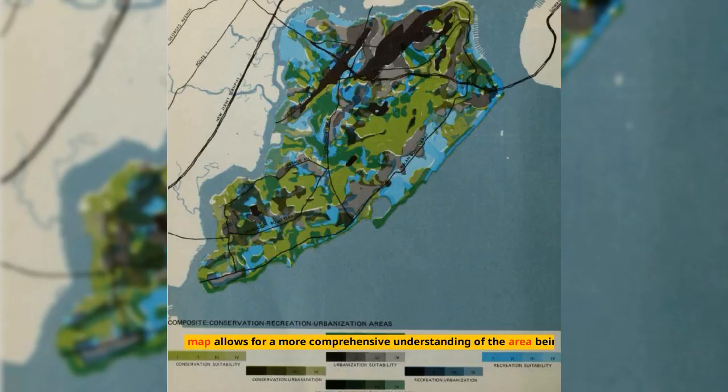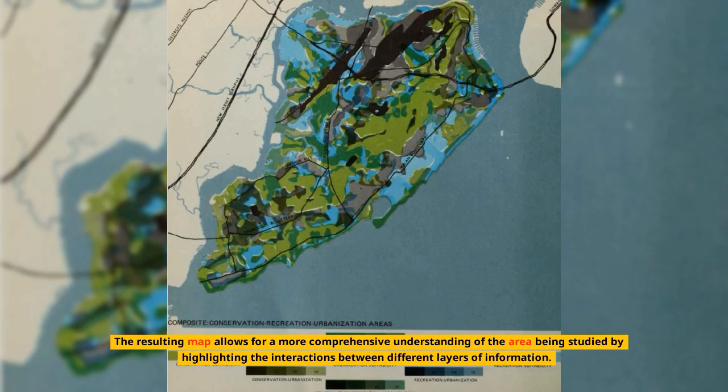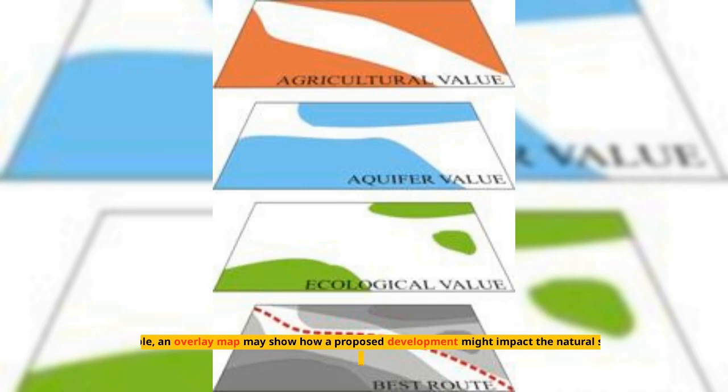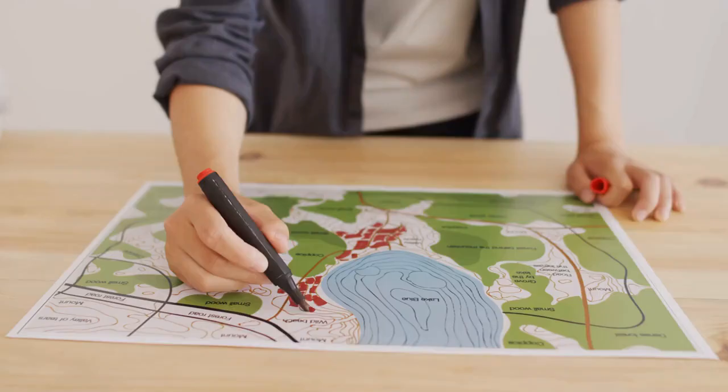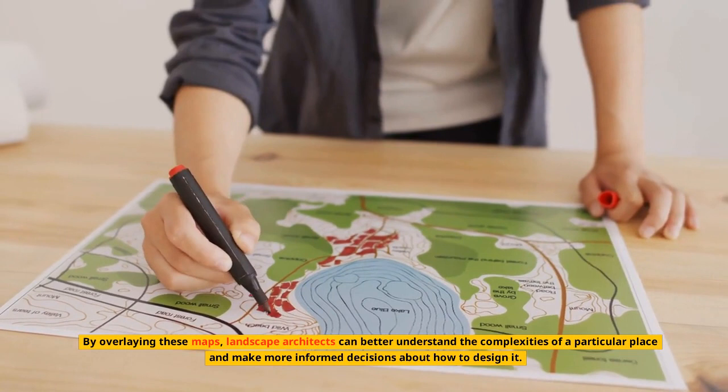The resulting map allows for a more comprehensive understanding of the area being studied by highlighting the interactions between different layers of information. For example, an overlay map may show how a proposed development might impact the natural systems in the area, or how a new transportation route might affect the cultural and historical significance of a particular place. By overlaying these maps, landscape architects can better understand the complexities of a particular place and make more informed decisions about how to design it.